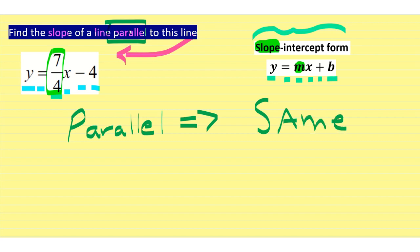So if we want the slope of the line that is parallel to this line, it will have the same slope. So that means the slope of our parallel line is 7 fourths. It's exactly the same. So that's the answer to our question.